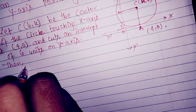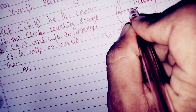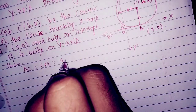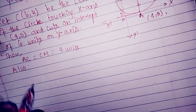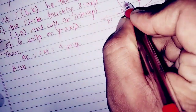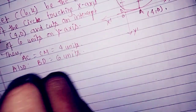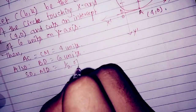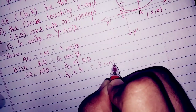The perpendicular drawn from the center to the y-axis gives CM, and OA is equal to 4 units. So CM equals 4 units. Also, the y-intercept BD equals 6 units, and MD equals half of BD, which is 3 units. So MD is equal to 3 units.